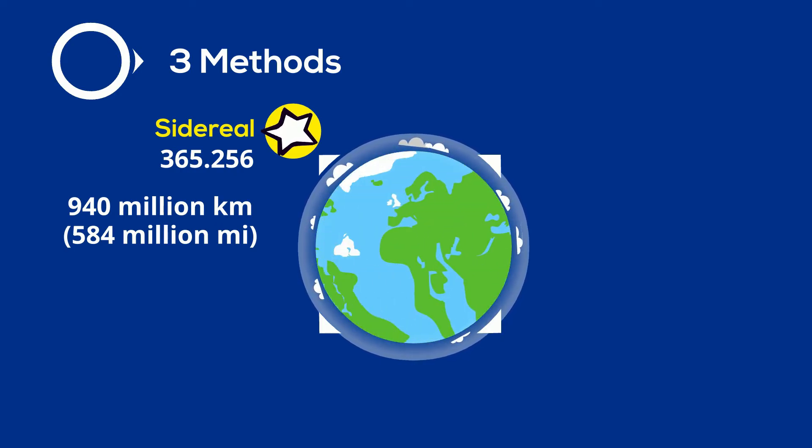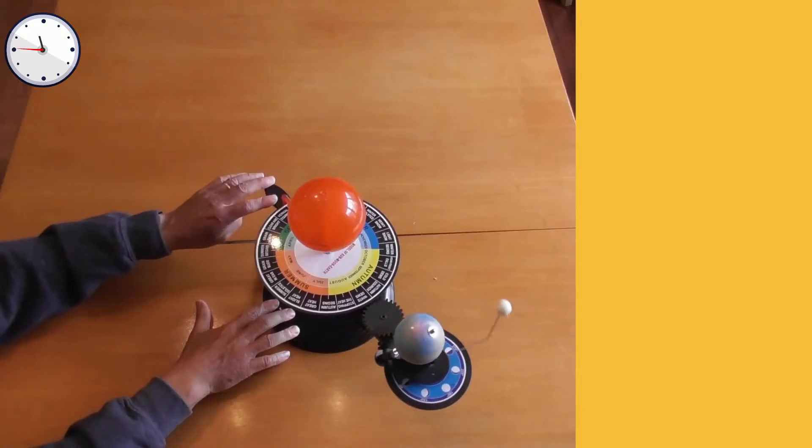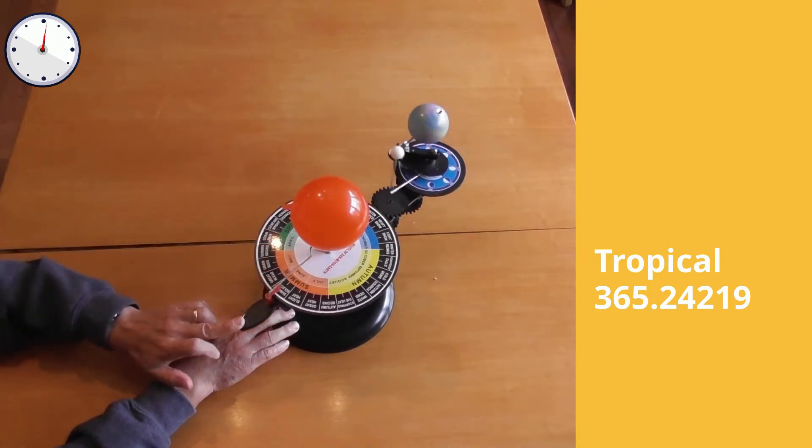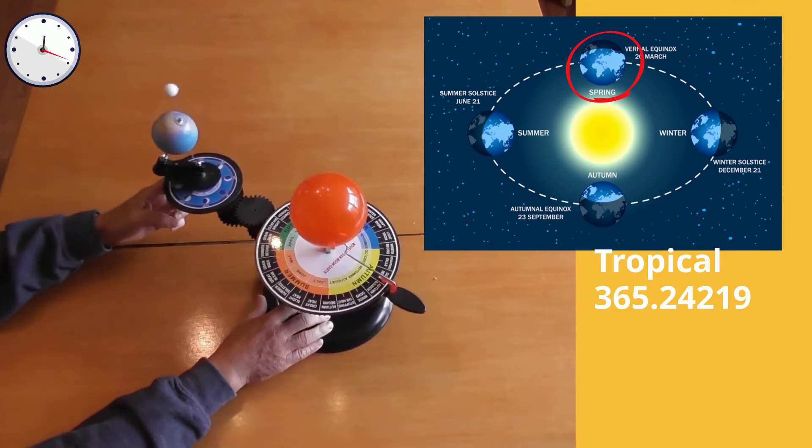Another method is called the tropical method. A tropical year is 365.24219 days, and it is the time from one vernal equinox to the next vernal equinox.